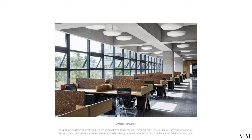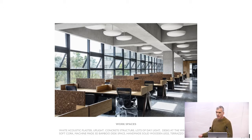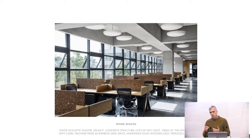Moving into administrative spaces, we kept playing with the same kind of materiality and started designing furniture — we wanted to give people not just a table but a small personal space. We started to diversify materials: bamboo engineered panels, handmade walnut legs, and soft cork, to play with the different materials.